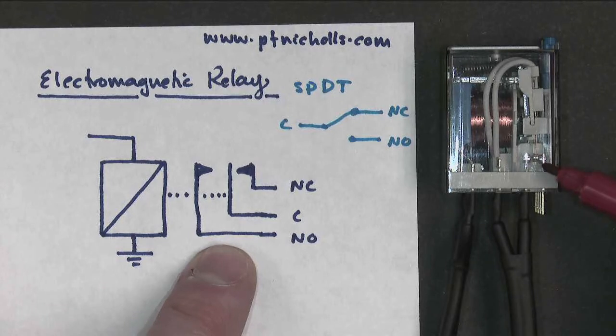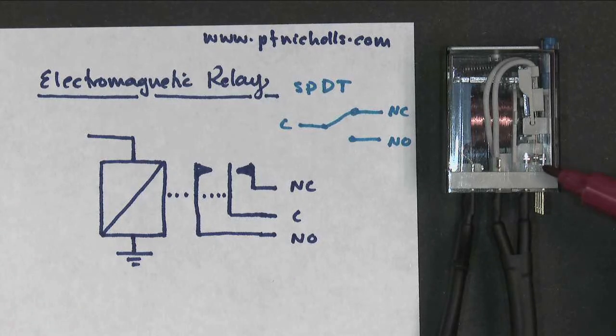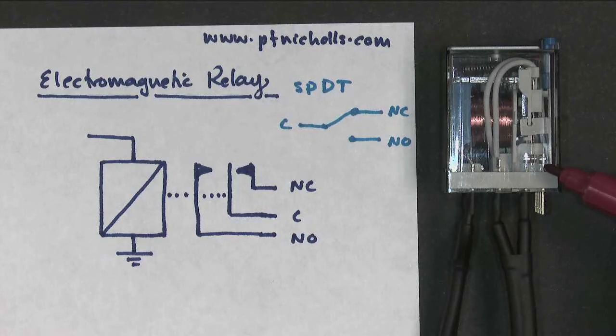Now when I turn the magnet on, watch what happens to the switch, it moves. So the magnet becomes a magnet, it attracts the metal armature, it moves the switch.